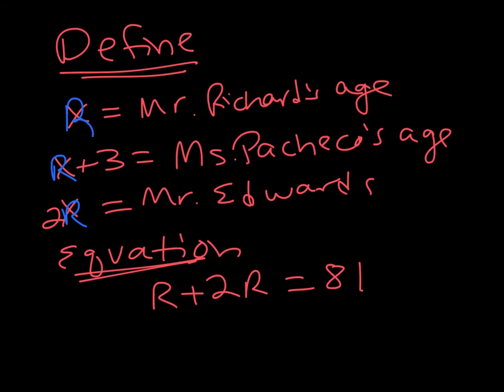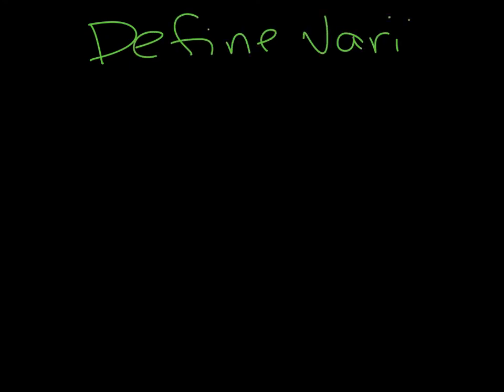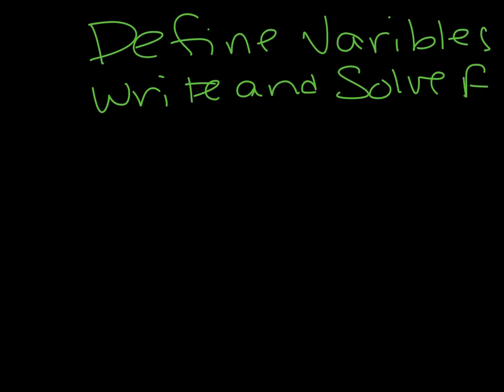You would solve it and make sure you declare your answer. So whenever you are solving word problems using the modified 5D process, here is what we need: you need to define the variables — you'll get points for that. You need to write and solve an equation — you'll get points for writing the equation and points for solving it. And then you need to declare in a sentence, just like before, what your answer is. That is how you will be graded for these problems. Let's get practicing — see you soon.